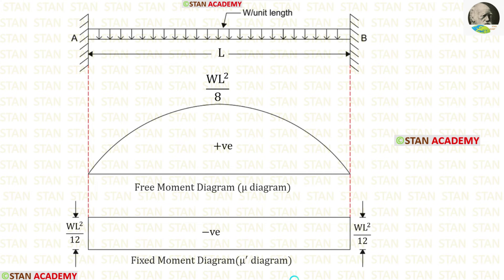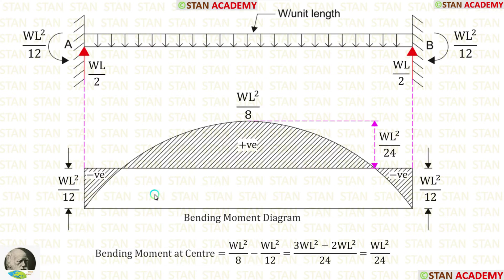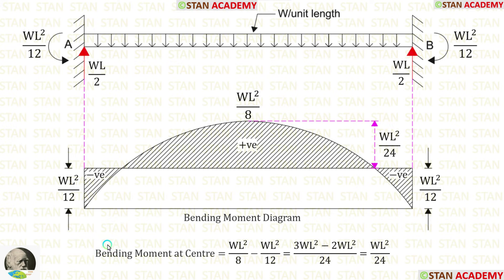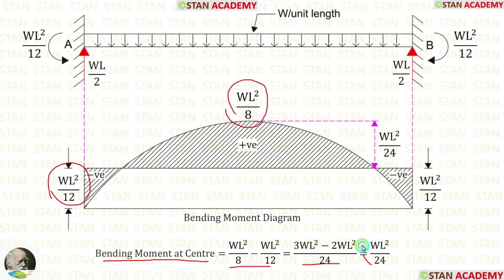Now we are going to draw the bending moment diagram. For that, we have to combine the free moment diagram and the fixed moment diagram. Wherever they are acting together, we keep the space empty; wherever they act alone without overlapping, we mark them. The bending moment at the center is found by subtracting WL²/12 from WL²/8, giving WL²/24.